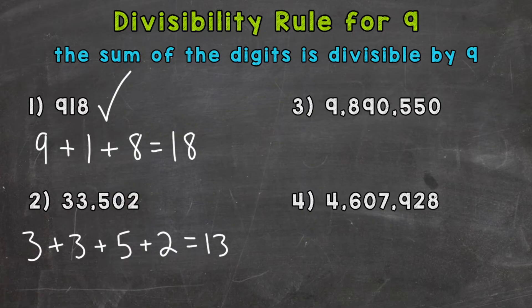So 3 plus 3 is 6 plus 5 is 11 plus 2 equals 13. So 13 is not divisible by 9. Therefore, our original number 33,502 is not divisible by 9 either.